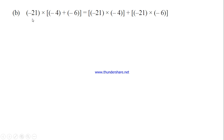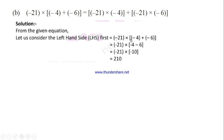The question asks to verify, so let's take the LHS value first: minus 21 into [(-4) + (-6)]. First simplify the square bracket value. Opening the bracket: (-4) + (-6) — these are like signs, so we add and keep the common sign: minus 10. So we get minus 21 into minus 10.